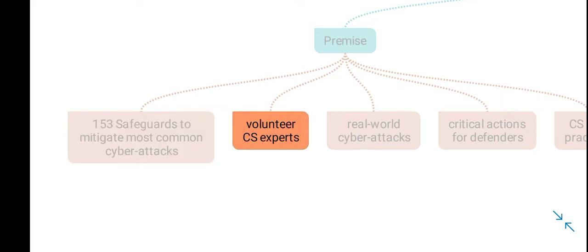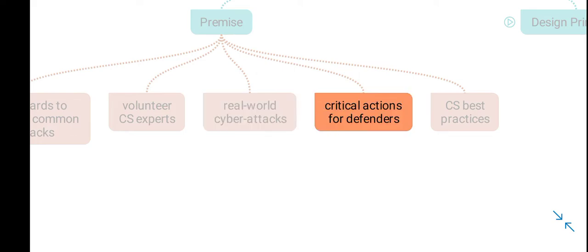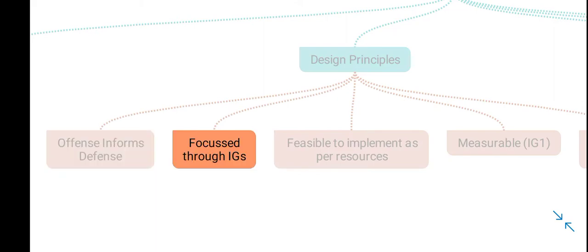This document is compiled by volunteer cyber security experts who have analyzed real-world cyber attacks and recommended critical defensive actions for organizations. These are cyber security best practices. This document is oriented towards offense — that is, they have analyzed cyber attacks and derived their defensive measures out of these offensive attacks. They have prioritized the implementation of 153 safeguards by dividing these safeguards into three implementation groups based upon criticality and also based upon the resources or size of an organization.